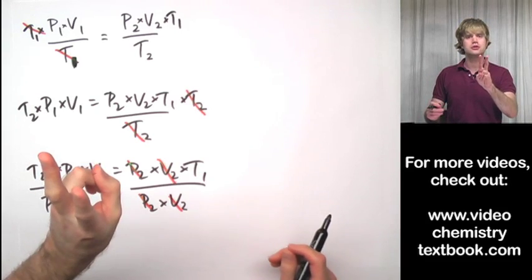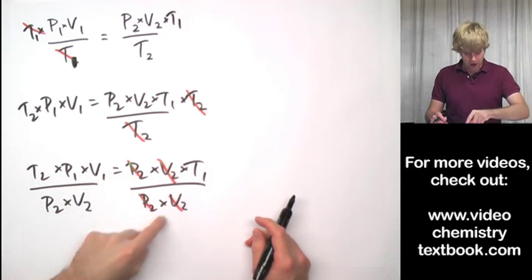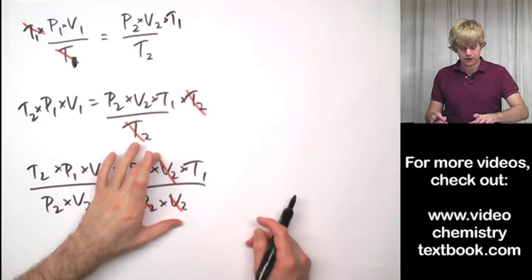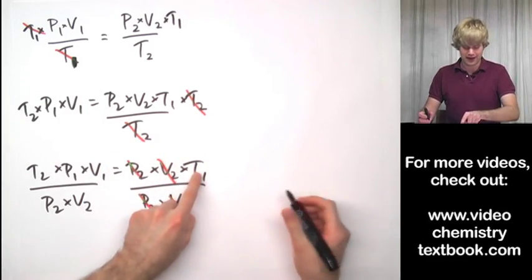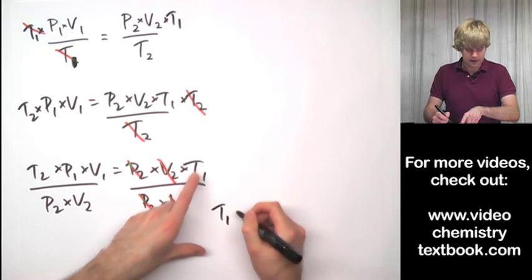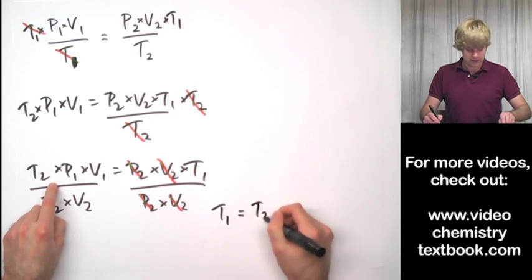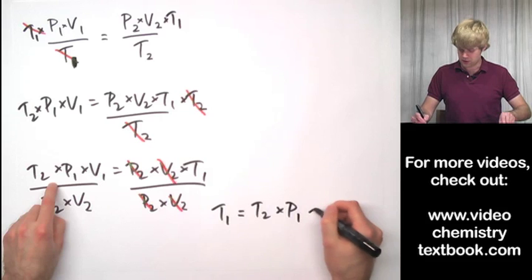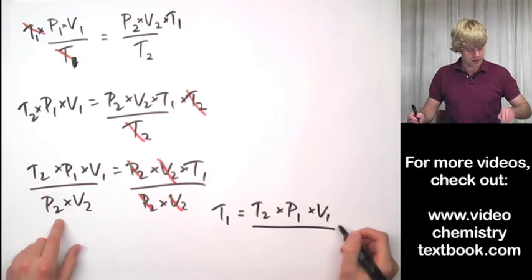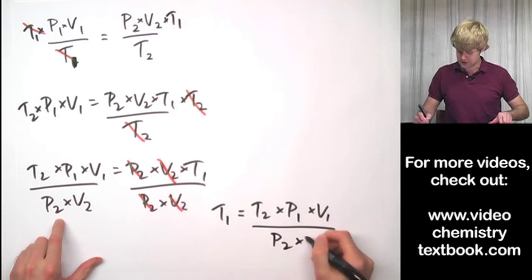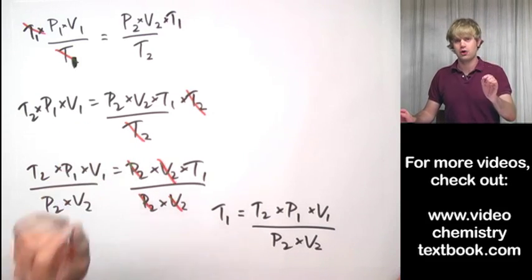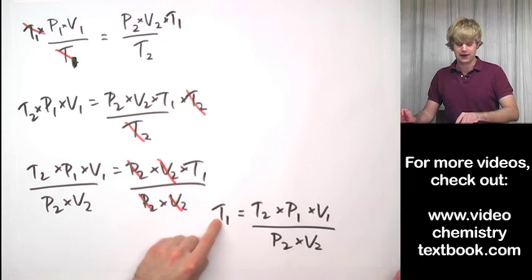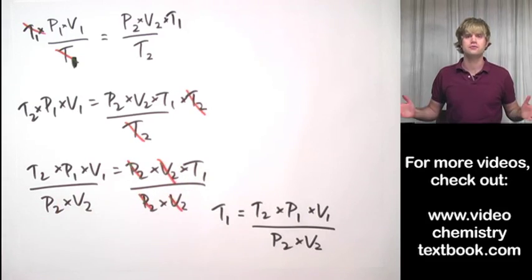I'm going to do this in two steps. I obviously have gotten rid of these guys, so I could write it as this equals T1, but just to show you that I can flip it, I'm going to write it as T1 equals T2 times P1 times V1 divided by P2 times V2. That's just if you prefer to have the variable that you're solving for on the left side. Just remember that you can always flip it.